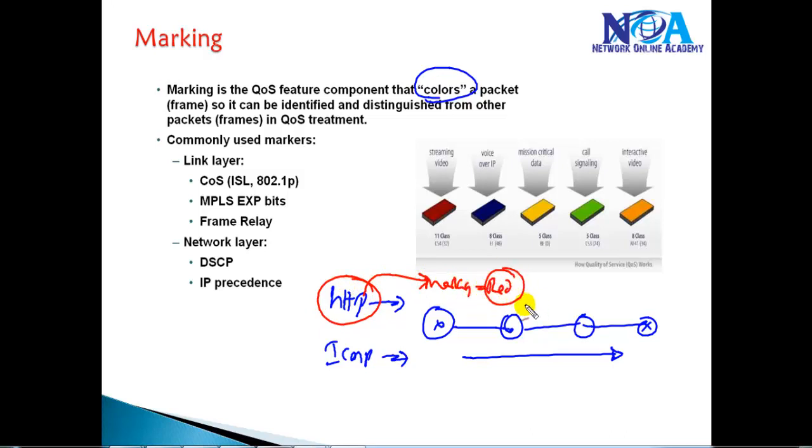What we can do is match a specific traffic and apply some marking value. As it moves on the network, on the remote routers we can match based on that particular marking value, and each and every device is going to treat the priority of that particular traffic based on the marking.